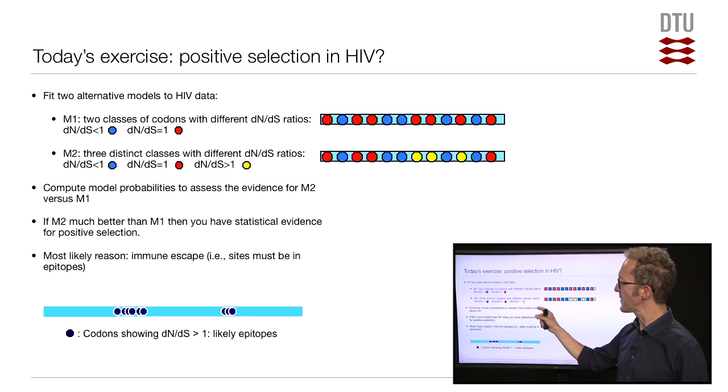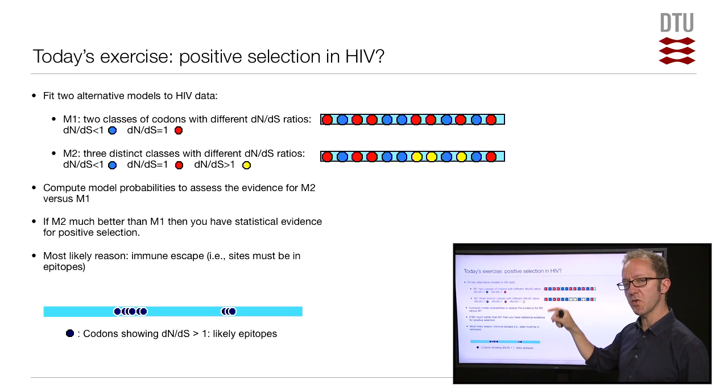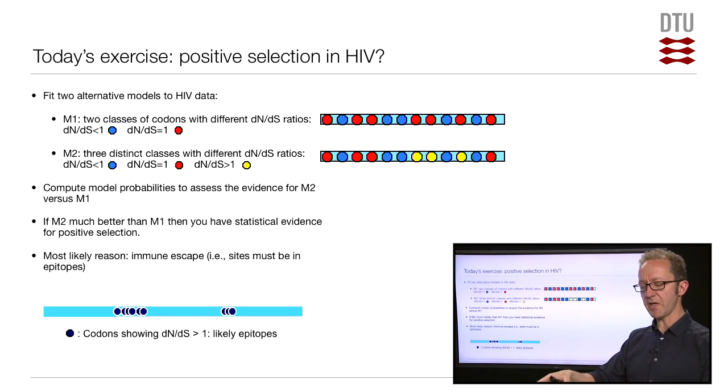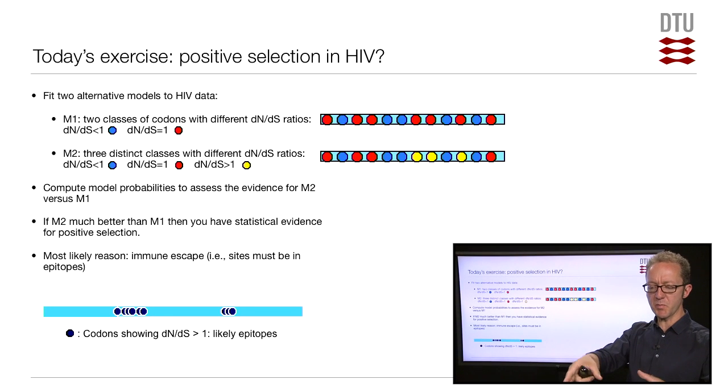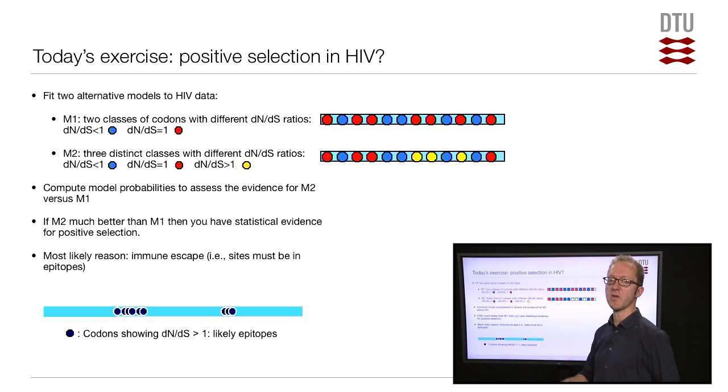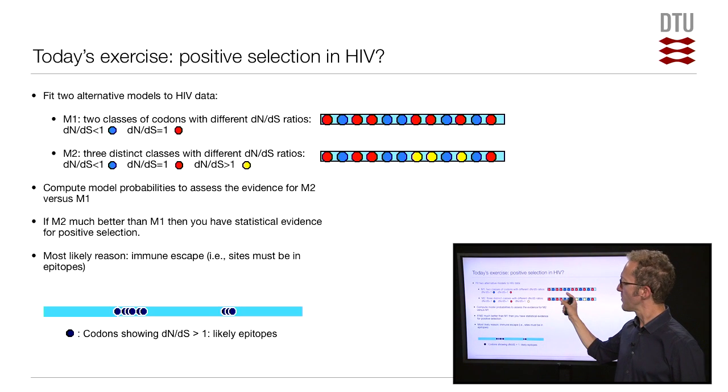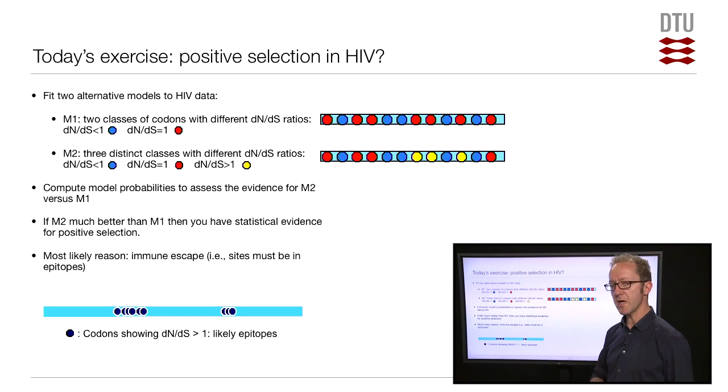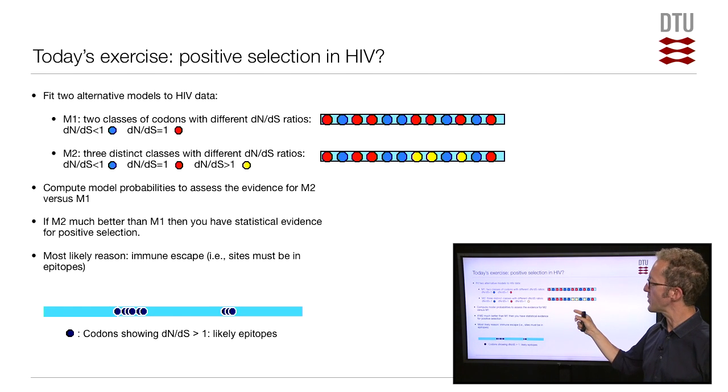So therefore, we like to limit the amount of parameters we have in a model. One way of doing that is that instead of having every single codon have its own DN-DS ratio, we instead divide them into a number of broad classes and say, all of the codons that have less than 0.5, we put them in that bin. All of the ones that have between 0.5 and 1, we put them in that bin, et cetera. So this is the first model we will consider. That's a model where we have two such classes of codons with different DN-DS ratios.